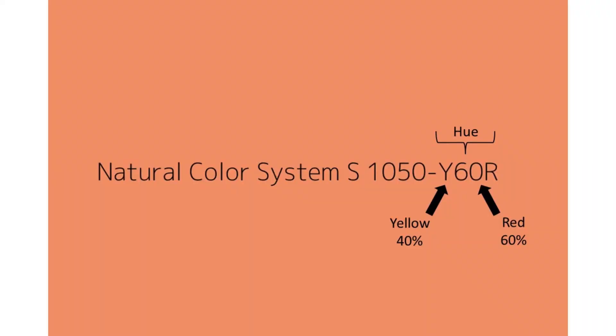As for the end part of the code, consisting of both letters and numbers, here we are reading the hue of the color. Like the first four numbers, the last part of the code also equals a hundred percent. The first letter — in this case Y — stands for yellow, and the last part, 60R, stands for 60% red, meaning the remaining 40% is yellow. So there's more red compared to yellow in this specific color. To read off the color hue more easily, you use the color circle.